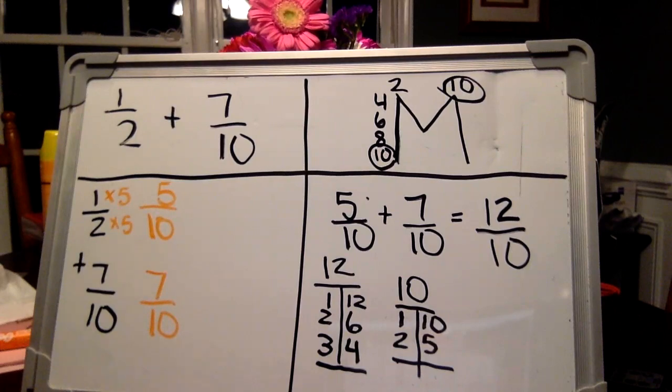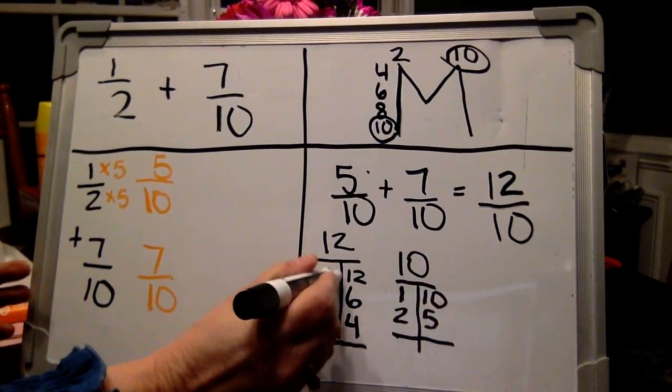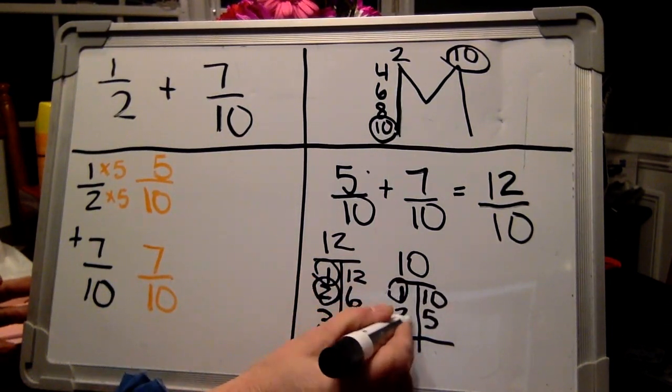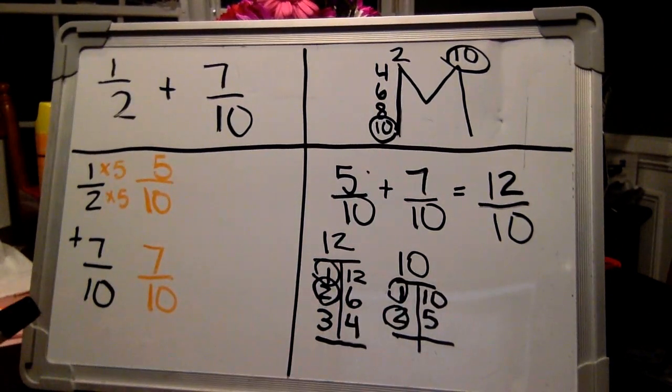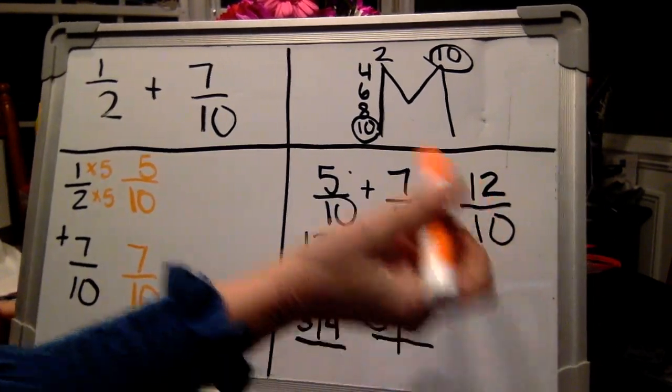Let's circle all of the common factors that we have. One, one, two, two. Is that it? That's it. So our greatest common factor is two, which means we need to divide our top and bottom by two.